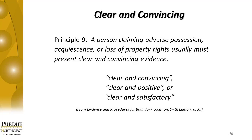Section 2-15 covers clear and convincing. Principle 9 says that a person claiming adverse possession, acquiescence, or loss of property rights must usually present clear and convincing evidence. Modern courts require proof of property rights by unwritten means to be clear and convincing, or clear and positive, or clear and satisfactory, or in some other way clear. Section 2-16 covers beyond a reasonable doubt. The text says that beyond a reasonable doubt is the proof usually required to prove guilt in criminal cases, yet this degree of evidence is also required by the Bureau of Land Management in differentiating between a lost and obliterated corner.